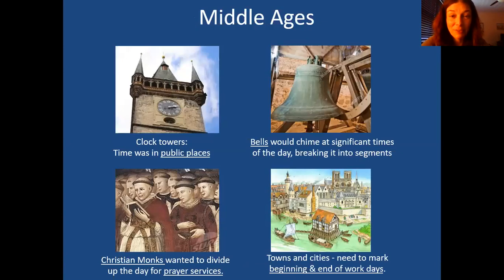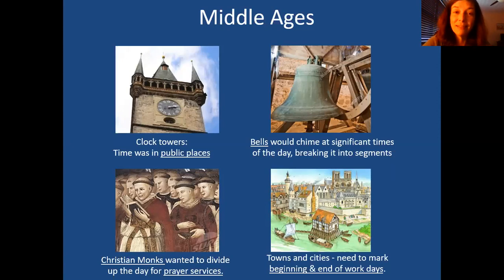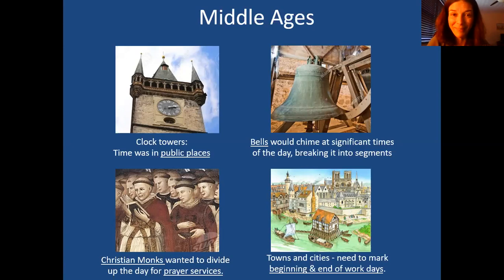In the Middle Ages, clocks had been developed, but they were usually on clock towers in public places like the town square. If you wanted to know the time, you had to go there, and every town decided on its own what time it was — not consistent from town to town. They also had church bells or town bells that would ring at significant portions of the day, marking the beginning or end of the workday, or prayer times for monks.